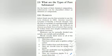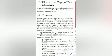Let us first discuss about elements. Robert Boyle was the first scientist to use the term element in 1661. Antoine Laurent Lavoisier was a French chemist who was the first to establish a useful definition of an element. He defined an element as a basic form of matter which cannot be broken down into simpler substances by chemical reactions.